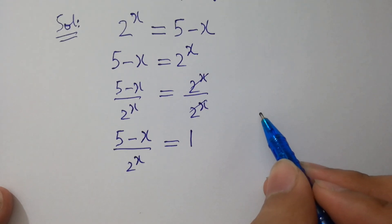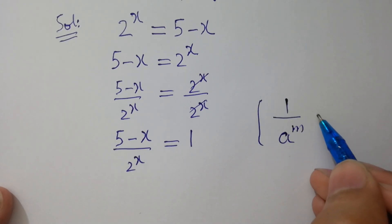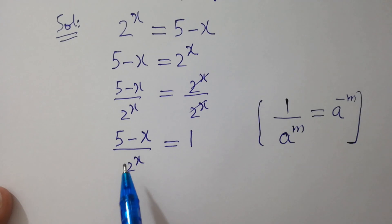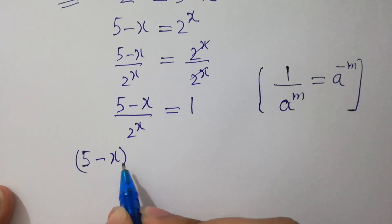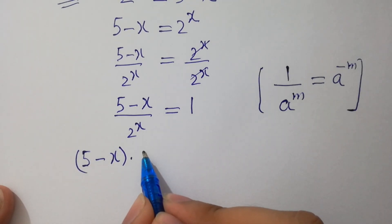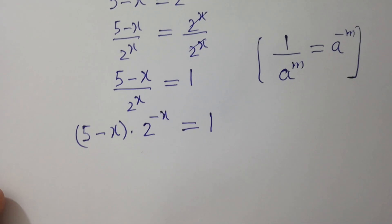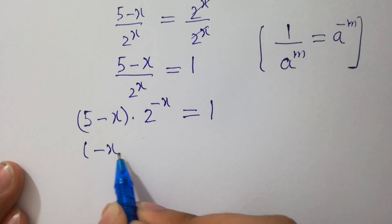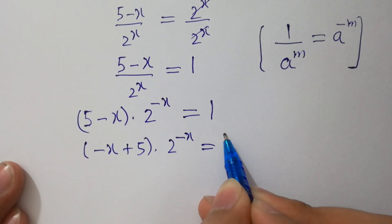Since we know that 1 over a to the power m equals a to the power minus m, (5 minus x) over 2 to the power x becomes (5 minus x) times 2 to the power minus x, equal to 1. This can also be written as (minus x plus 5) times 2 to the power minus x equals 1.